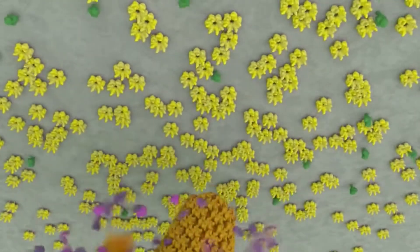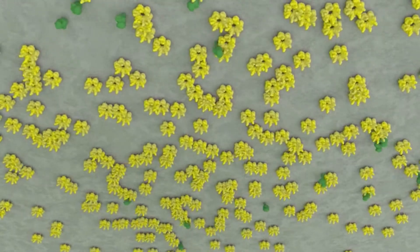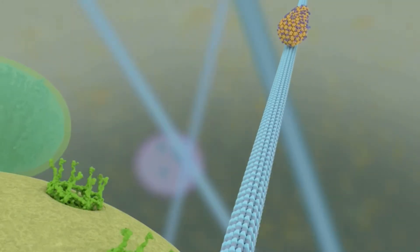Inside of the cell, the virus starts to move towards the nucleus, using microtubules as a sort of highway system.